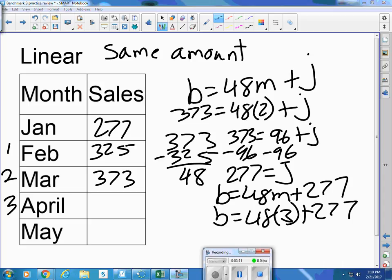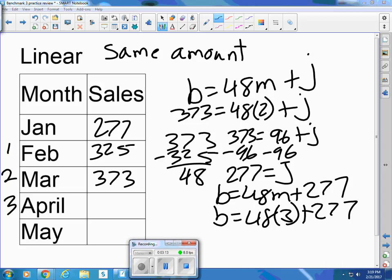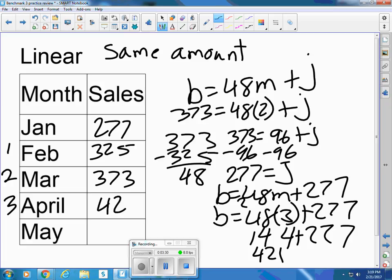So the number of boards would be 48 times 3 months plus 277. So that would be 3 times 8 is 24. 3 times 4 is 12, plus 2 is 144, plus 277. Add them up and you have 421. So once we have the equation, we can continue to fill out the table.